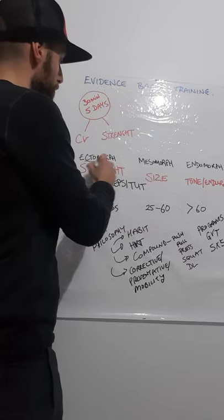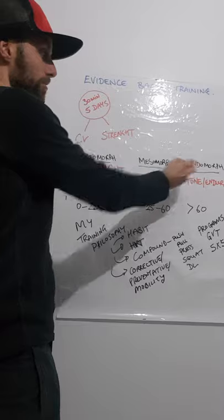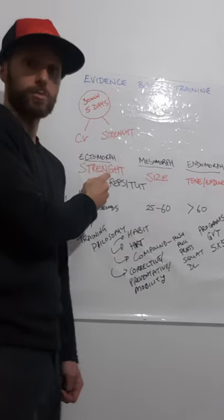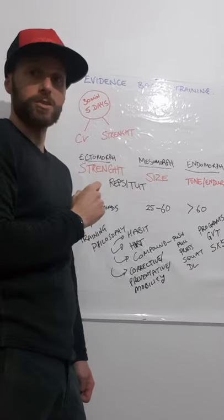If we talk about body type first, you've got ectomorph, mesomorph, endomorph. Your ectomorph is kind of where I am - more of a runner's body type.